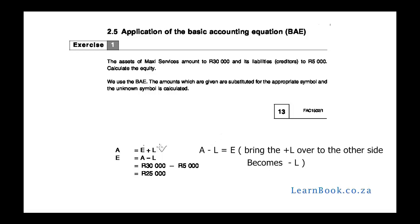We take the plus L and bring it over to the other side to become minus L. So assets minus liabilities equals owner's equity. We can also state this as: equity is equal to assets minus liabilities. We substitute the values — $30,000 minus $5,000 — and work out that equity equals $25,000.